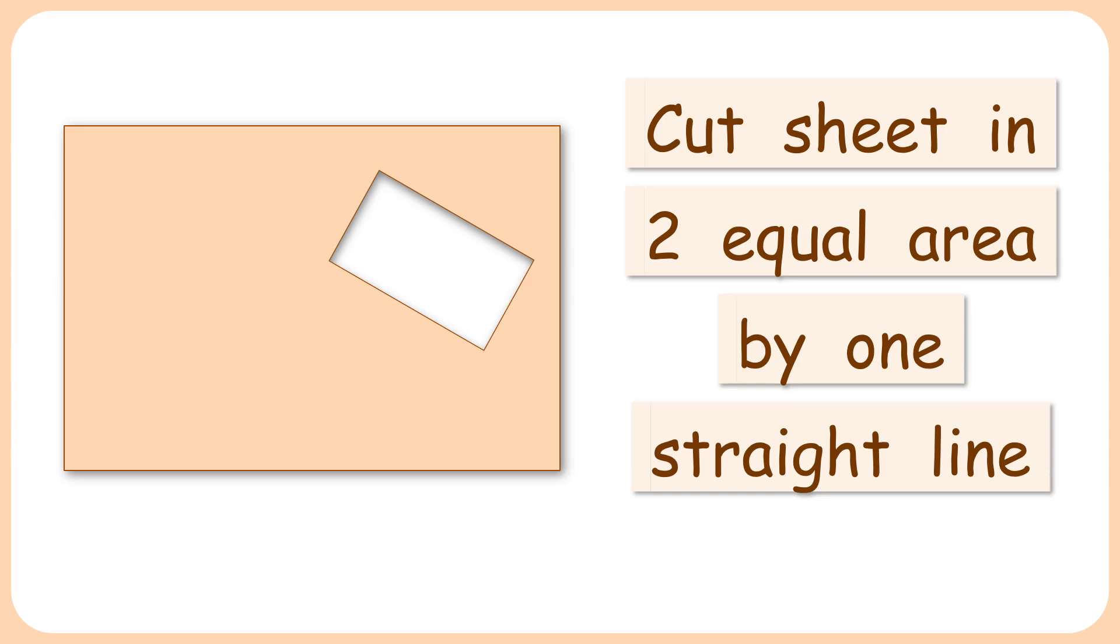In this interesting question given to us is a rectangular sheet with a rectangular hole cut into it. We have to find a straight line across which the sheet should be cut so that the two parts will have equal areas.